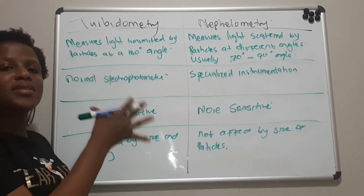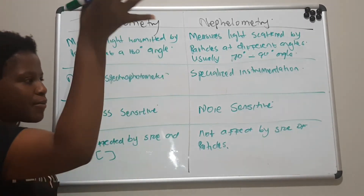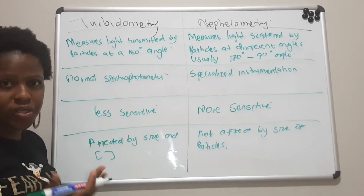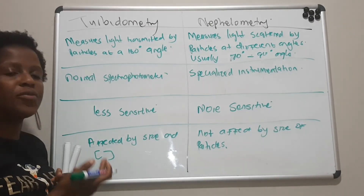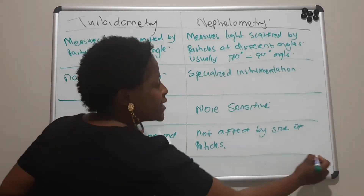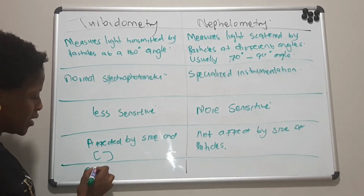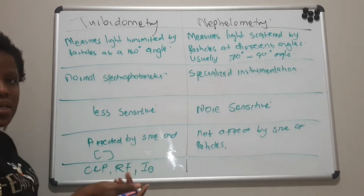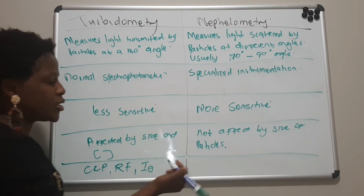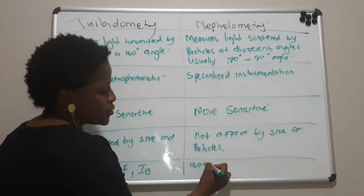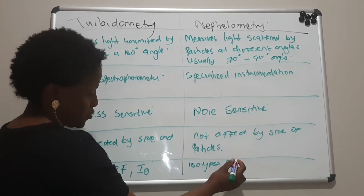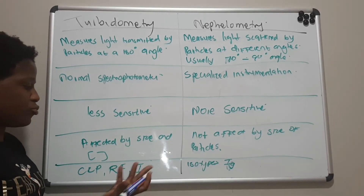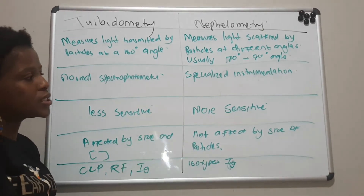By studying them in this comparison table, you've summarized every key aspect of turbidometry and nephelometry in one concise table, saving you time when you study. We can also add the tests that can be done: with turbidometry, you can determine CRP, rheumatoid factor, and immunoglobulins; with nephelometry, you can determine isotypes of immunoglobulins as well. You can add more tests to this list that use these principles.